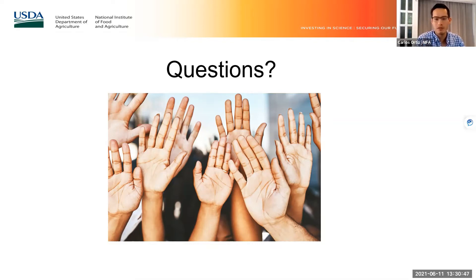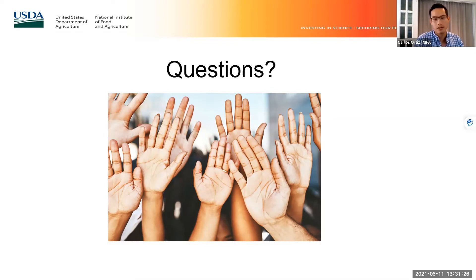An important question from the chat: 'Can a PI submit an application to FAME or any program in conjunction with an AFRI research proposal to broaden impact?' Carlos answers: Yes, but the projects cannot have significant overlap. They can complement each other, but there cannot be complete duplication of effort. NIFA must ensure taxpayer dollars are used efficiently and does not fund duplication. You can apply to every single program you're eligible for as long as your idea fits within the program goals and objectives.